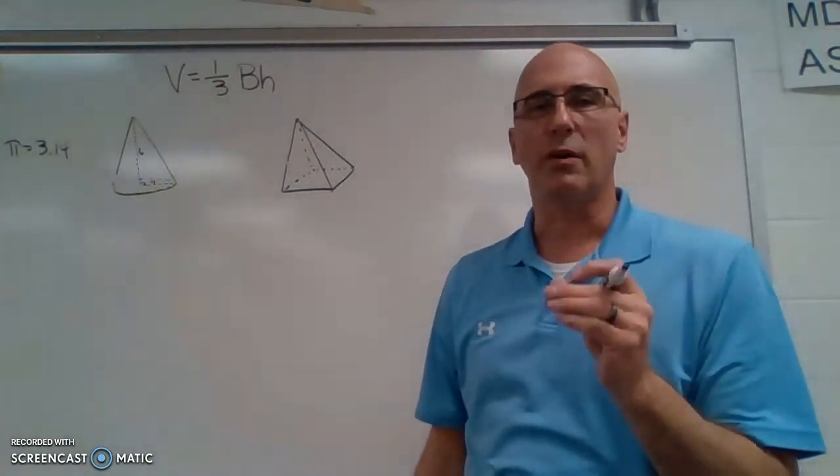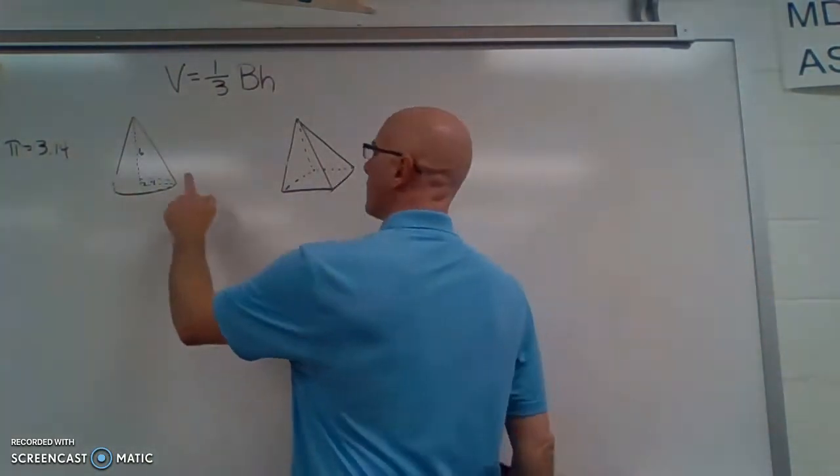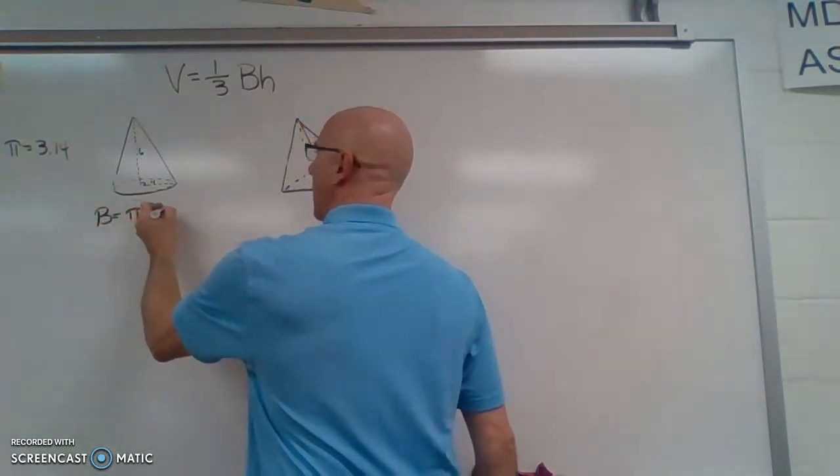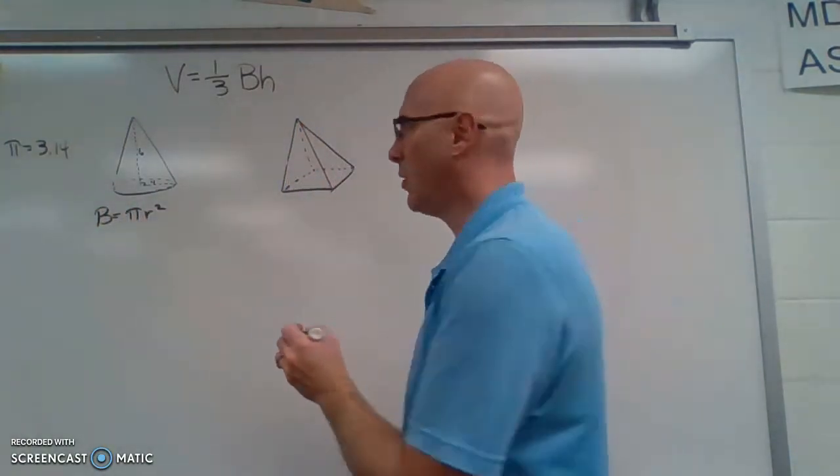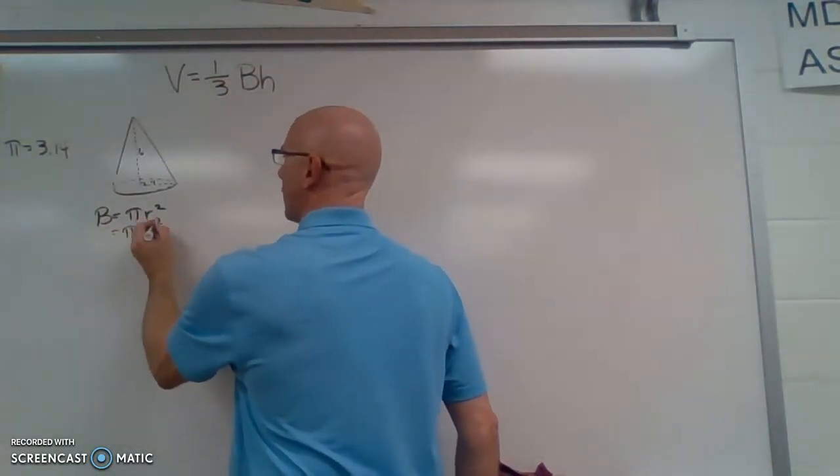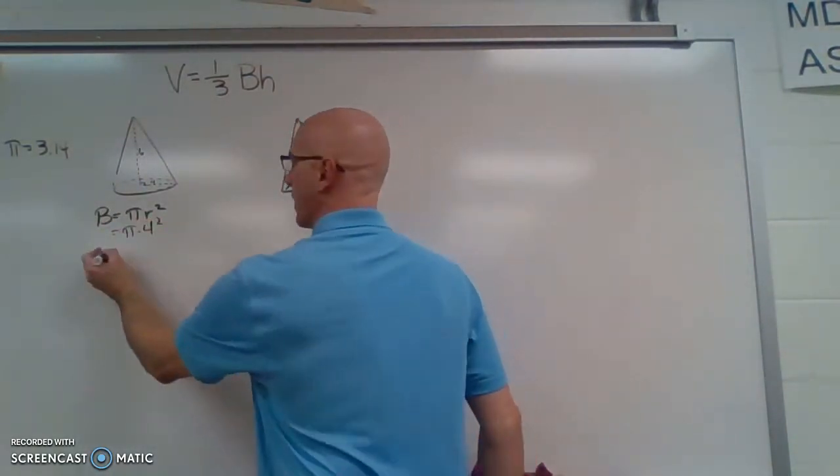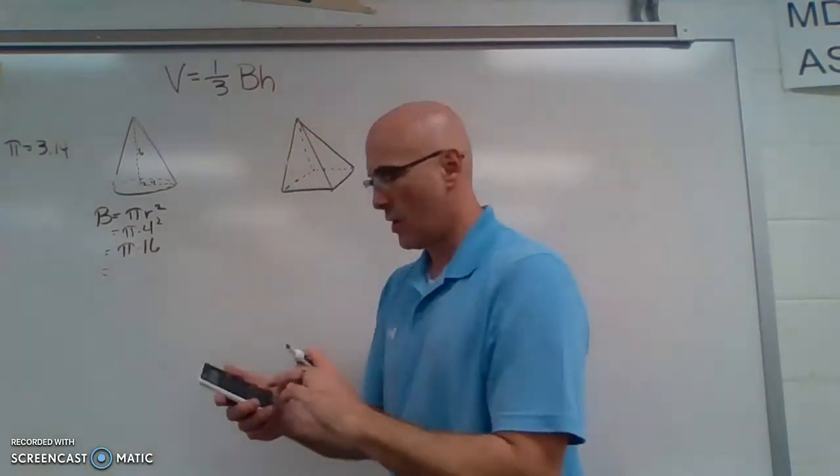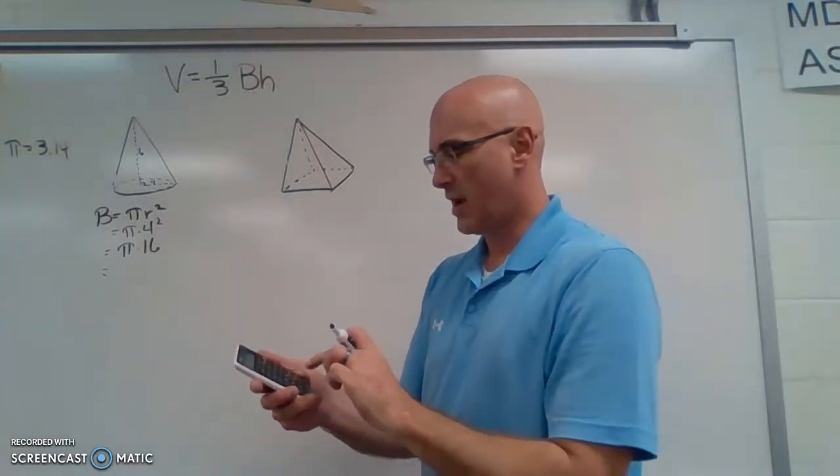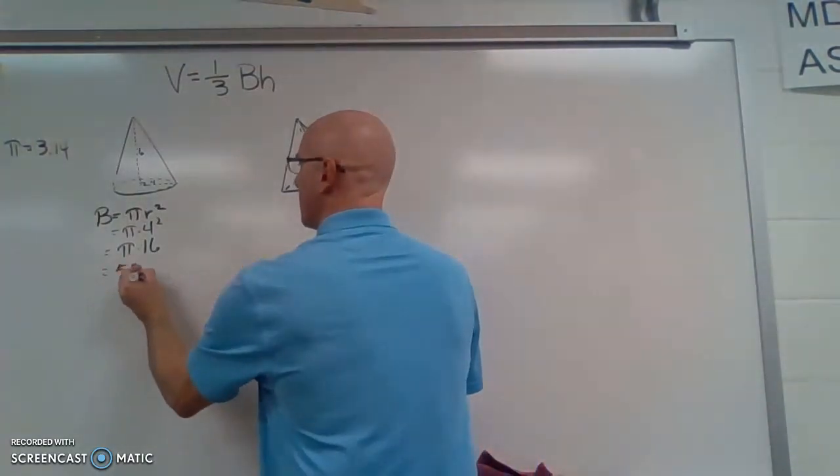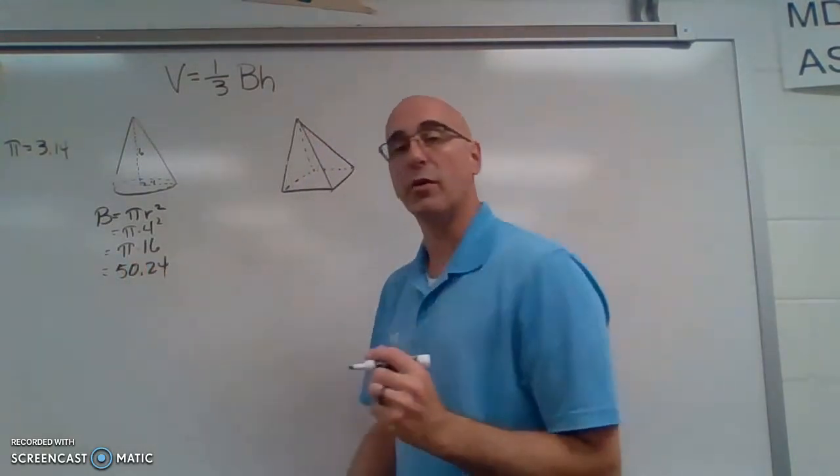So we want to know the volume of this cone. First we need to figure out what is our base. And that is pi r squared because it's a circle and our radius is four. So four squared is 16. And so 16 times 3.14 is 50.24 square units.